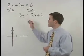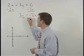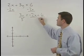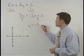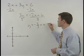Continuing on, to get y by itself, we would divide both sides by 3 to get y equals negative 2 thirds x plus 2.